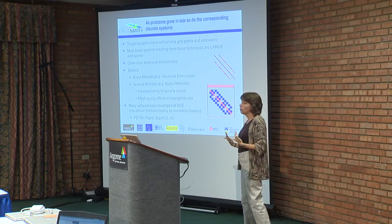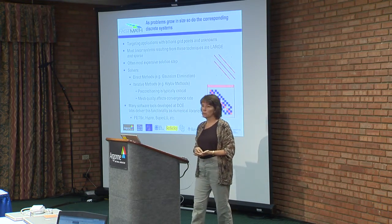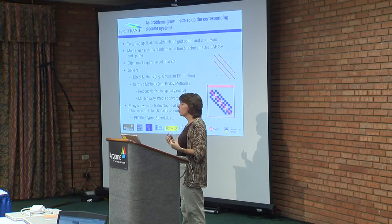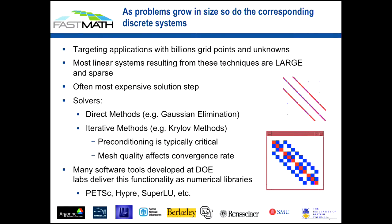As these problem sizes grow, so do the corresponding discrete systems. Typically we're solving problems with millions and billions of unknowns — imagine that simple 2-minus-1 matrix, but much bigger than the size of this building, with billions of unknowns. These systems are also much more complicated — that was a very simple tridiagonal system. These systems can get much more complex in terms of their non-zero structure. It's often the most expensive step in the solution process, taking anywhere from 50, 60, even 90 percent of the total solution time just to solve those linear systems.